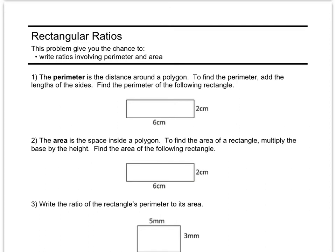Alrighty, and here we are on the other side with rectangular ratios. The perimeter is the distance around a polygon. So in this example, this side's 2, this side's 6, this side would be 2 also, and this side would be 6, since it says it's a rectangle. So 2 plus 6 plus 2 plus 6 would give me the perimeter of this rectangle.